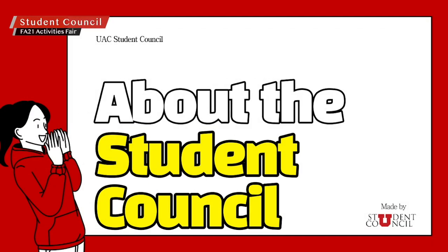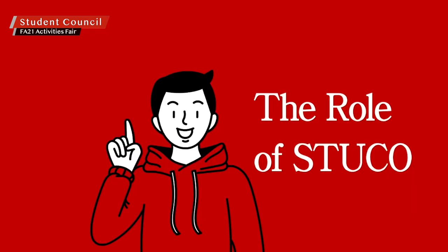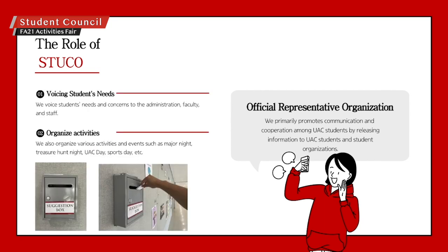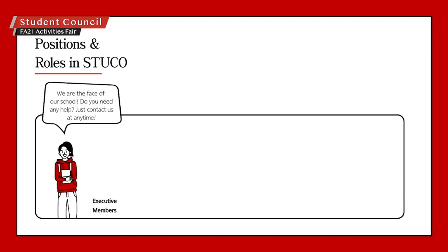Hello everyone, welcome to the University of Utah Asia Campus Student Council Introduction Video. Student Council, as stated in the Constitution, acts as an official representative organization for students at the University of Utah Asia Campus. We voice students' needs and concerns to the administration, faculty, and staff, and organize various activities to promote effective student leadership and resource efficiency. The Student Council is run by students and consists of nine positions with varying tasks and roles.